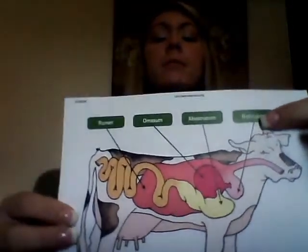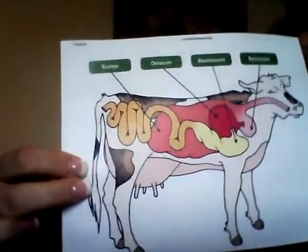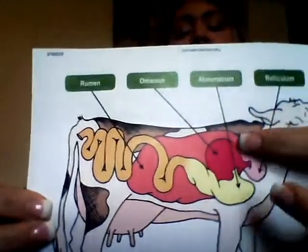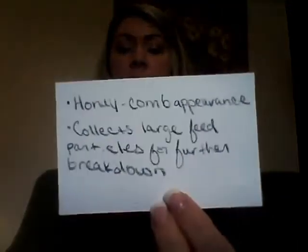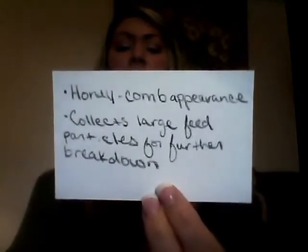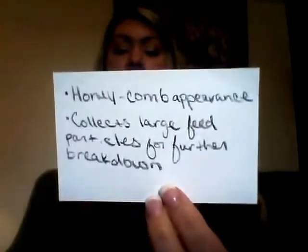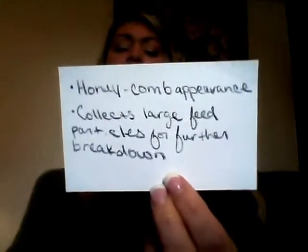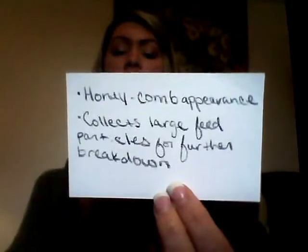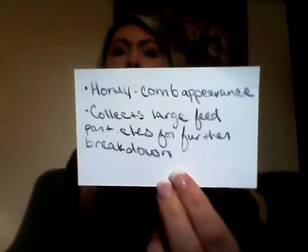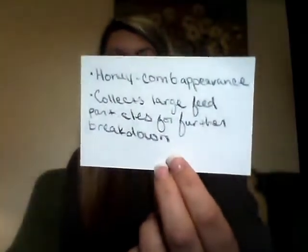For our ruminant animals, they have a reticulum. This reticulum is the little light pink part of this stomach. The reticulum has a honeycomb-like appearance to it and collects large feed particles for further breakdown. It is also known as the hardware section of the stomach because it collects any materials that aren't meant for digestion by an animal.